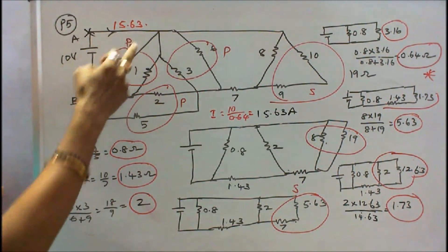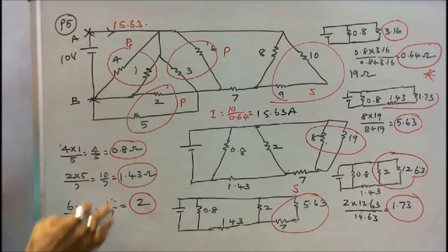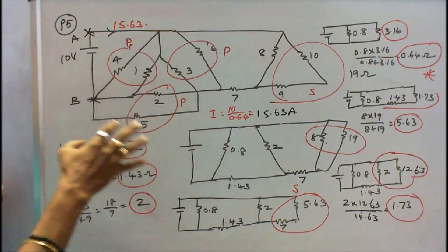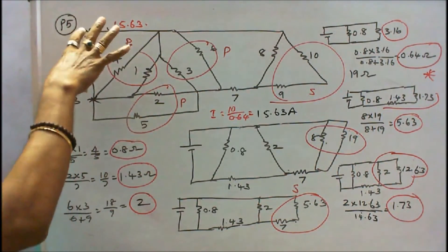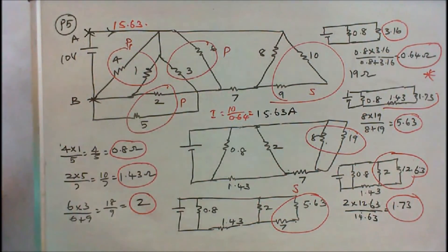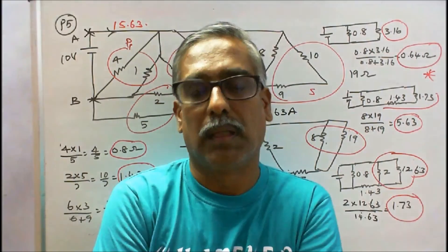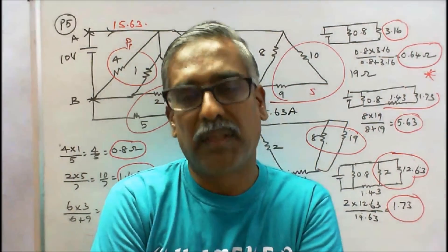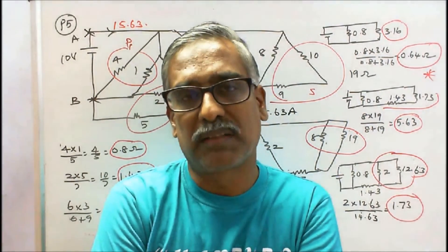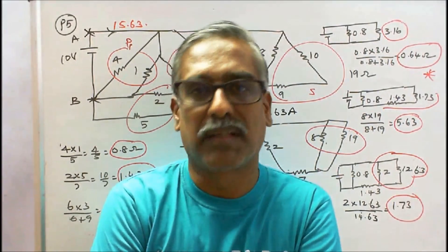Current supplied by the battery is 15.63 amps, and the total resistance across points A and B is 0.64Ω. This concludes the lecture. Thanks for listening.